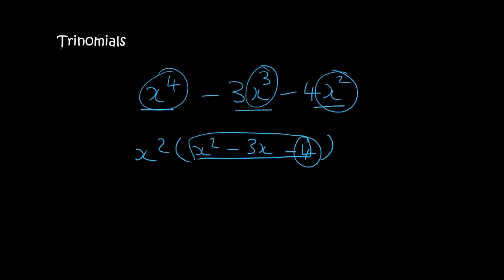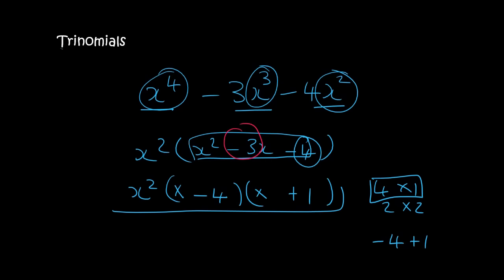So, what we do is we look at the number 4, and that is 4 times 1, or 2 times 2. A 4 and a 1 could make minus 3. How? By saying minus 4 plus 1. So, we leave the x squared on the outside. We open up our two brackets. We say x and x, and then we say minus 4 plus 1. And there we go, guys.